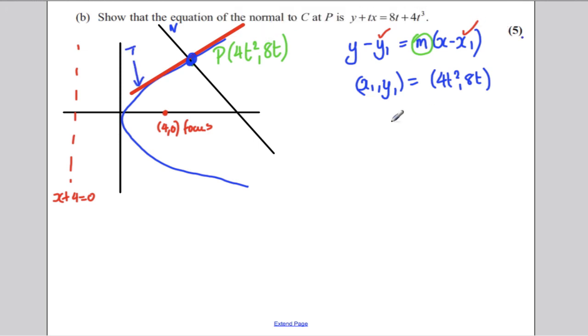Now, our curve is y squared is equal to 16x. Okay? So, we want to differentiate this. So, let's make y the subject. We're going to take square roots. Y is therefore equal to 4 times the square root of x. So, we can write that in index form as y is 4x to the half.